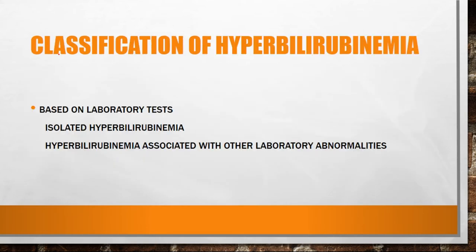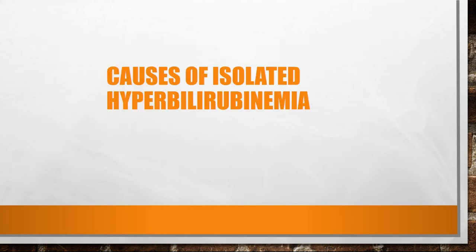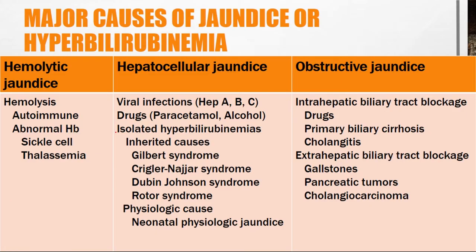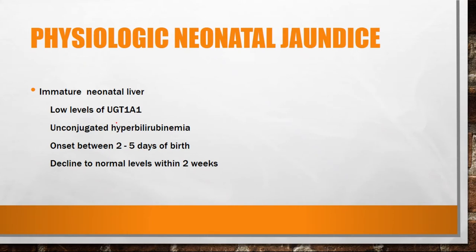The classification of hyperbilirubinemias based on laboratory tests gives us two types: isolated hyperbilirubinemia, and hyperbilirubinemia associated with other laboratory abnormalities. In this video, we are discussing isolated hyperbilirubinemia. The causes of isolated hyperbilirubinemia have already been explained in the table — these are the causes of isolated hyperbilirubinemia.